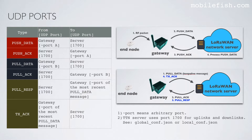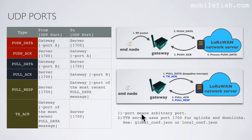Now let's look at the UDP ports. In case of push data, data is sent from gateway to server. On the gateway side an arbitrary port A is used; on the server side port 1700 is used. Note that a tilde port means arbitrary port. In this example the Things Network Server is used, which uses port 1700 for both uplinks and downlinks.